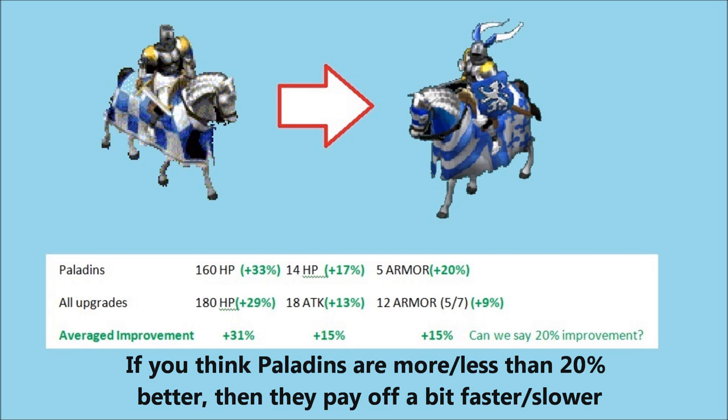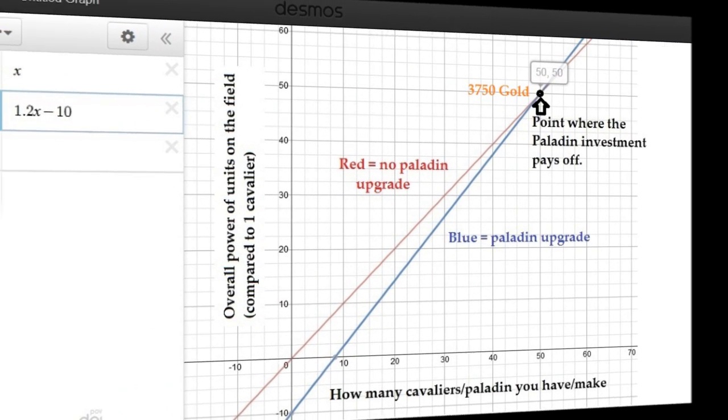Okay, so now we graph this relationship. Now this graph might look a little bit confusing, but basically the red represents the no Paladin upgrade, so the relationship there is x equals y. So our x is how many Cavaliers you've made, and on the y-axis, we have the overall power on the field that you have. So if you build one Cavalier, you get one Cavalier of power on the field. If you build two, then you get two Cavaliers on the field.